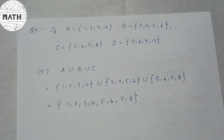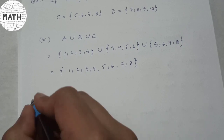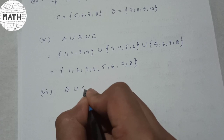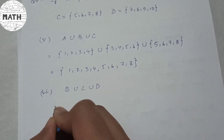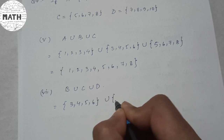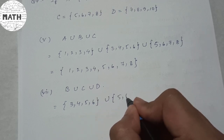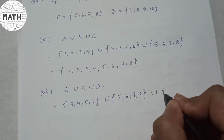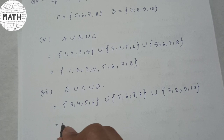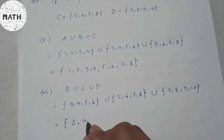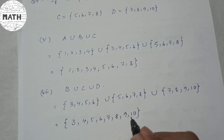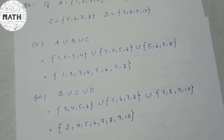Similarly, number 7: Find B union C union D, where B = {3, 4, 5, 6}, C = {5, 6, 7, 8}, and D = {7, 8, 9, 10}. Combining all three sets and writing each element only once, the answer is {3, 4, 5, 6, 7, 8, 9, 10}.